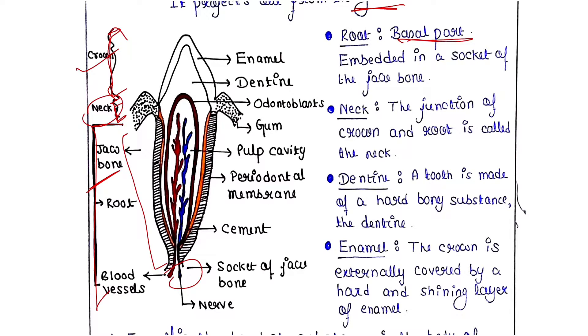The neck is the junction of the crown and root — it connects the two main parts of the tooth.